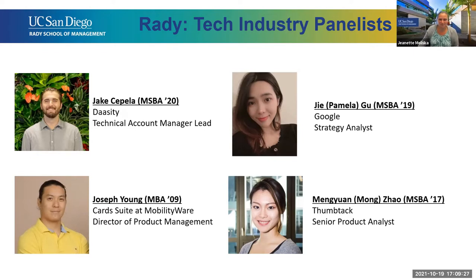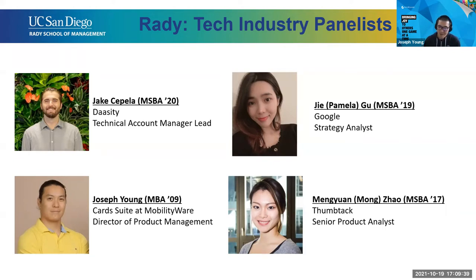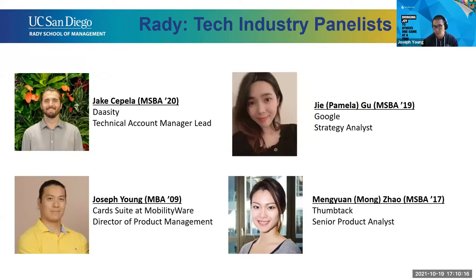Thank you for having me tonight. My name is Joseph Young. I'm the director of product at MobilityWare — I've been here for a year, and today is actually my anniversary. We make games for mobile apps: our most popular is Solitaire, which has been in the app store since 2008. We also have Spider, Free Cell, Pyramid, Spades, Hearts, and Sudoku. My day-to-day involves reviewing KPIs, finding more users, and using player data and reviews for roadmap and staffing planning.